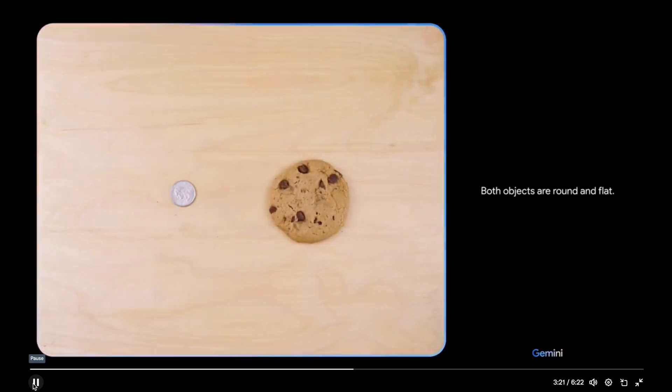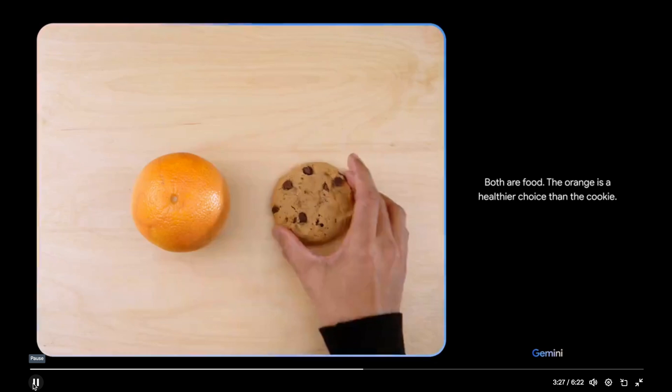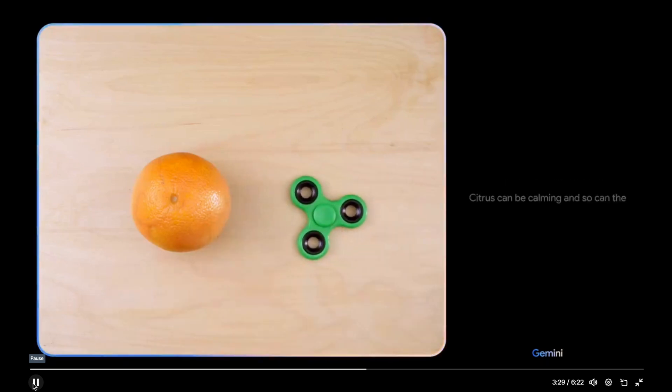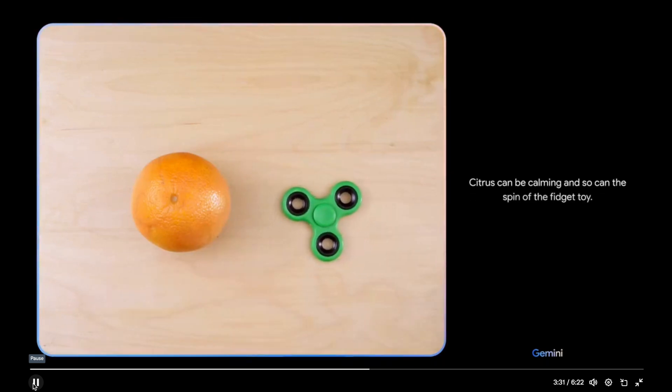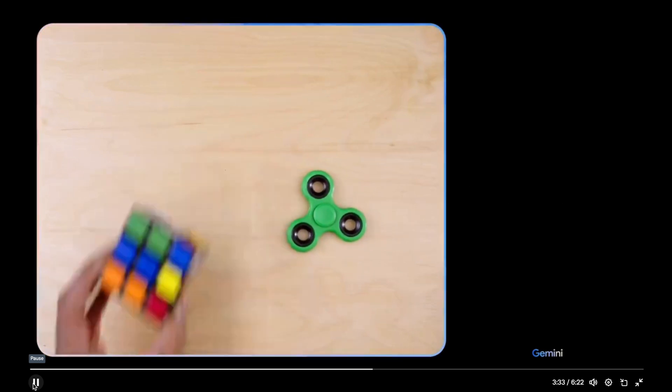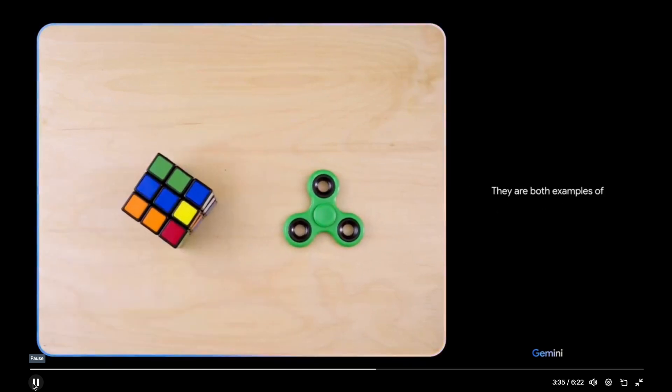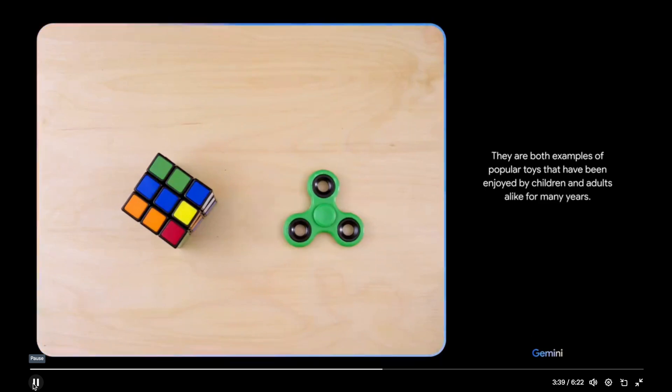Both objects are round and flat. There you go. Both are food. The orange is a healthier choice than the cookie. Citrus can be calming and so can the spin of the fidget toy. They are both examples of popular toys that have been enjoyed by children and adults alike for many years.